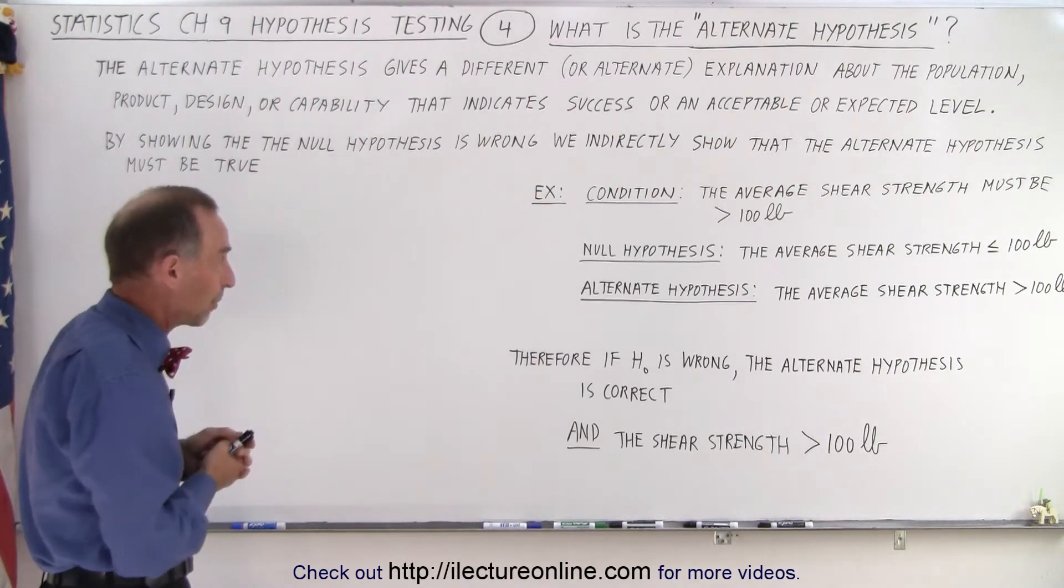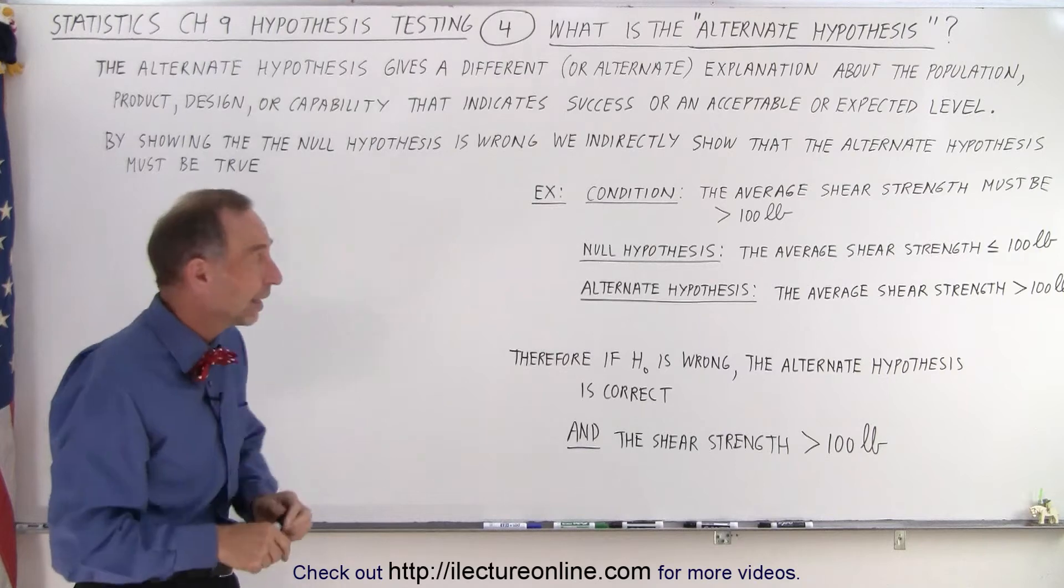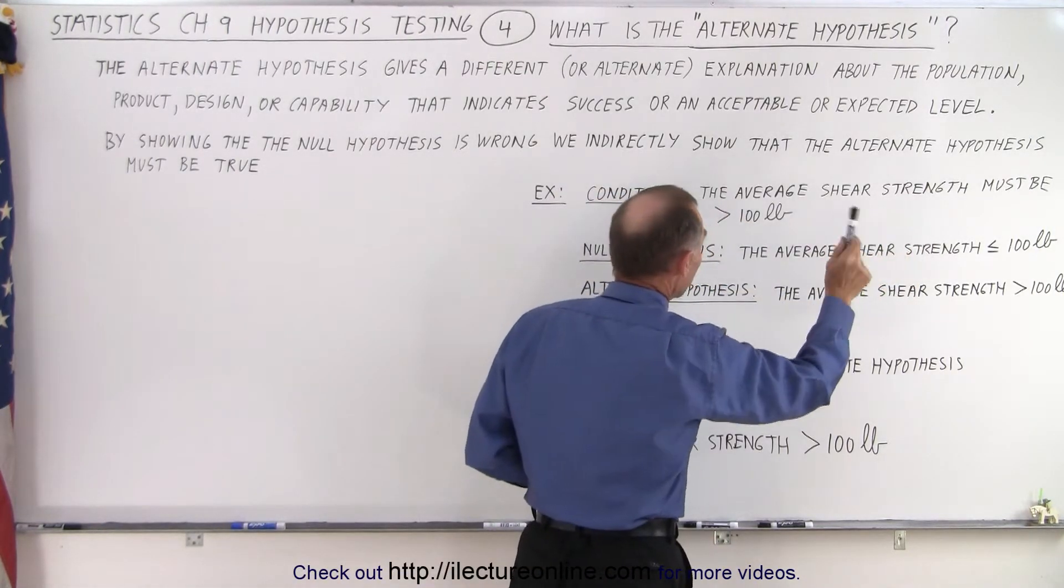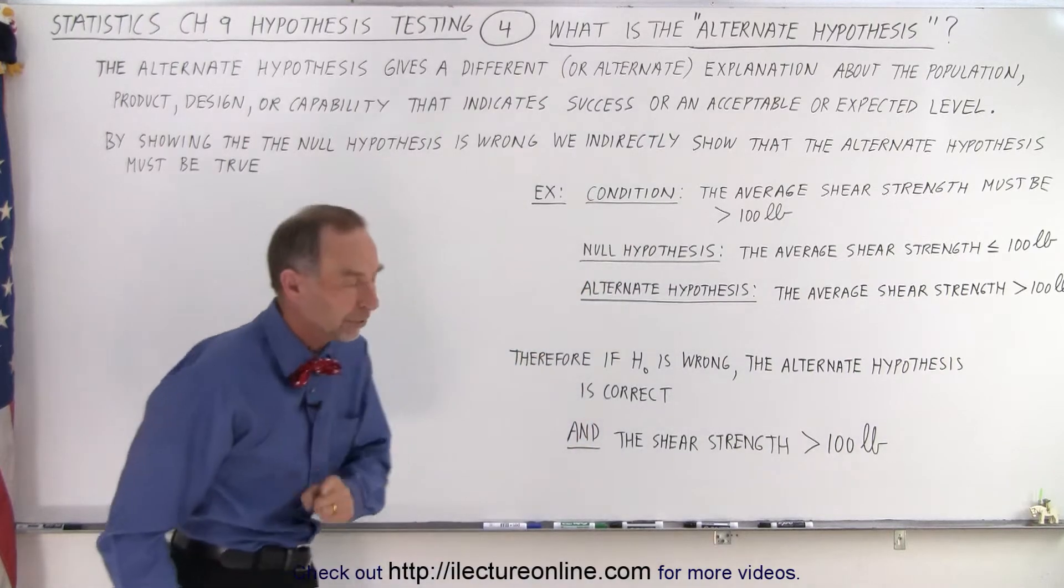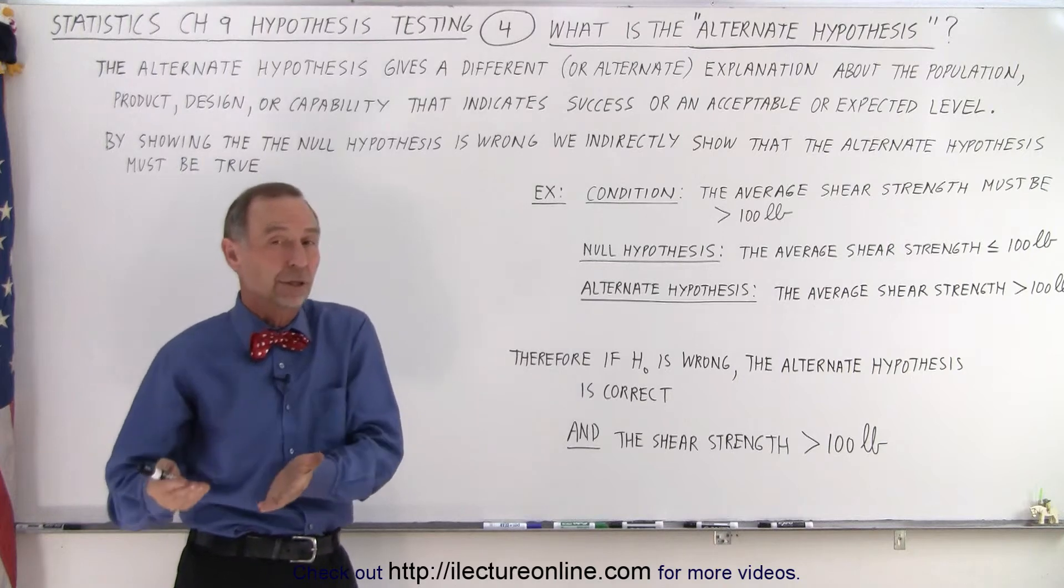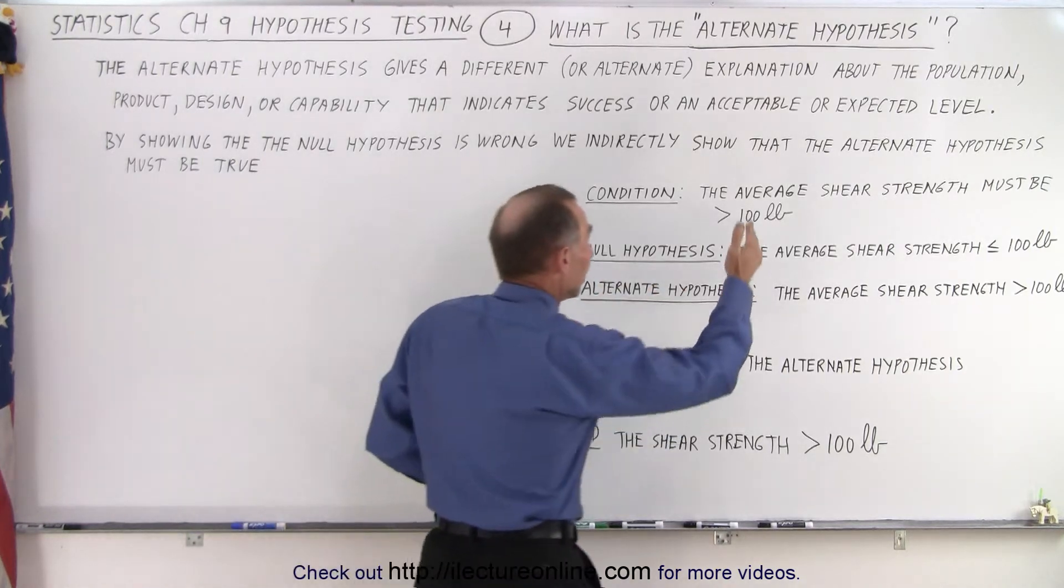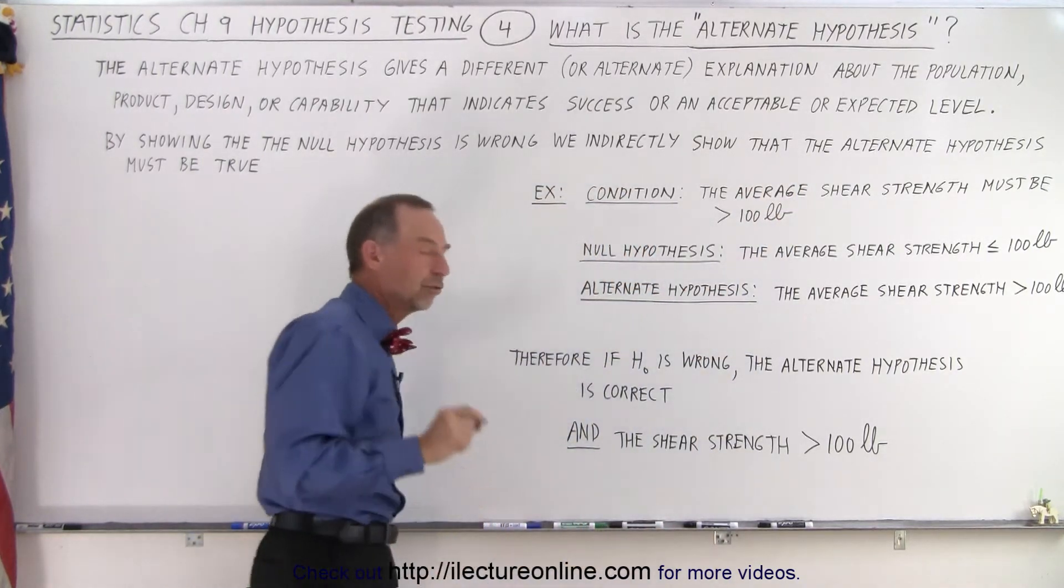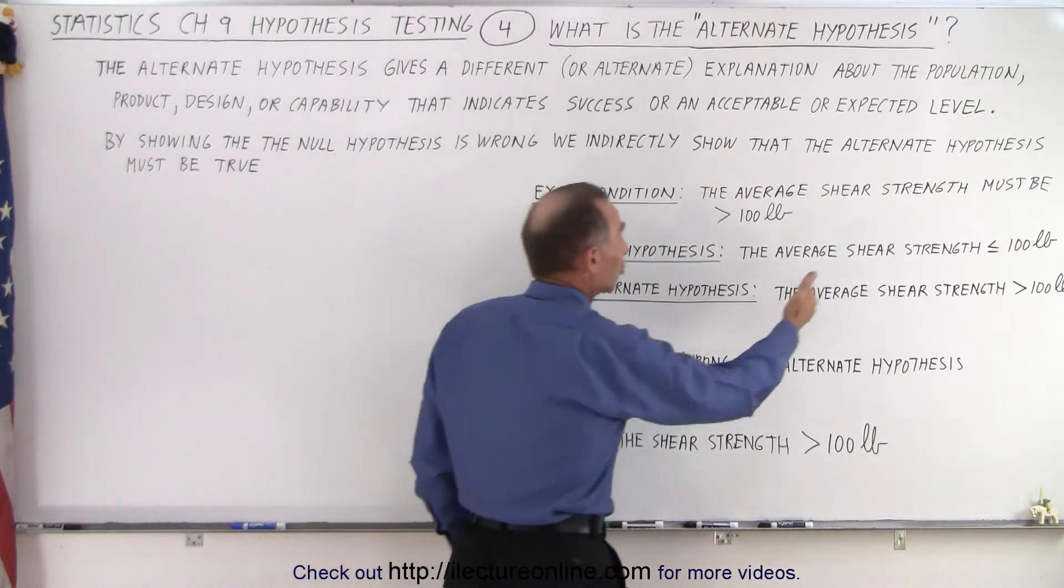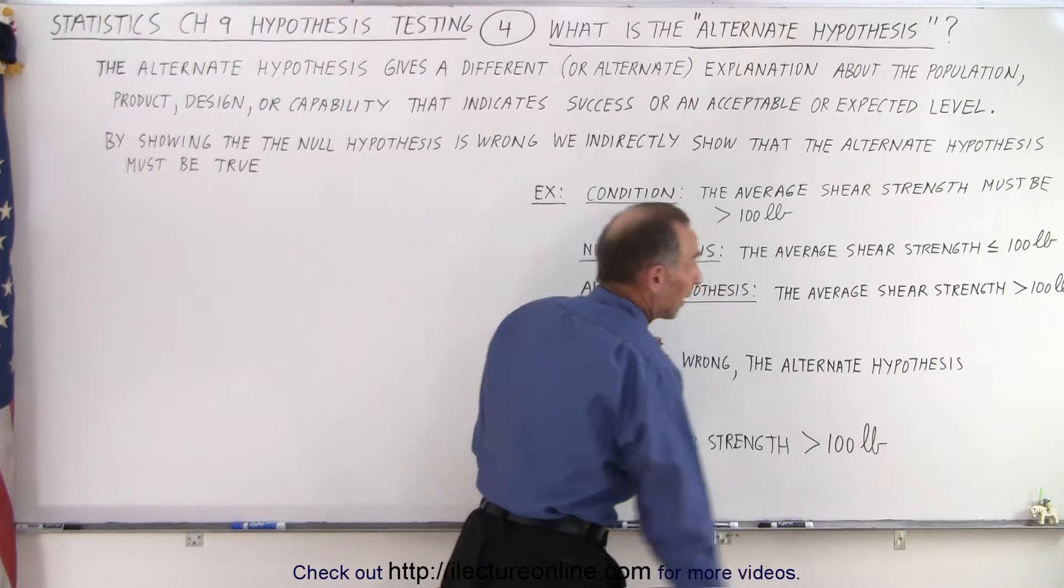Here's a simple example. Let's go back to our bolts, and again the condition is that the average shear strength of the bolts must be greater than 100 pounds. The null hypothesis told us that the average shear strength was less than or equal to 100 pounds, which means it would meet the condition required. And so therefore we create an alternate hypothesis that says that the average shear strength is greater than 100 pounds.